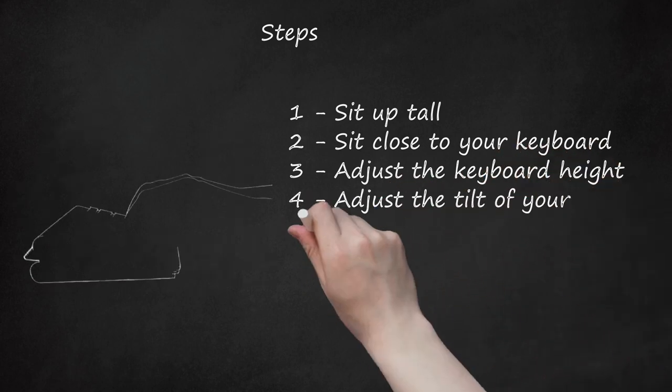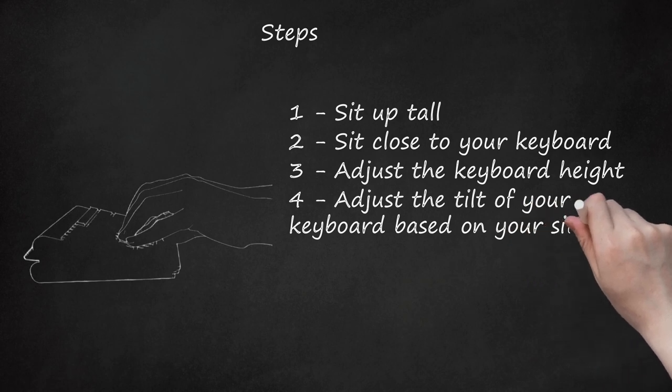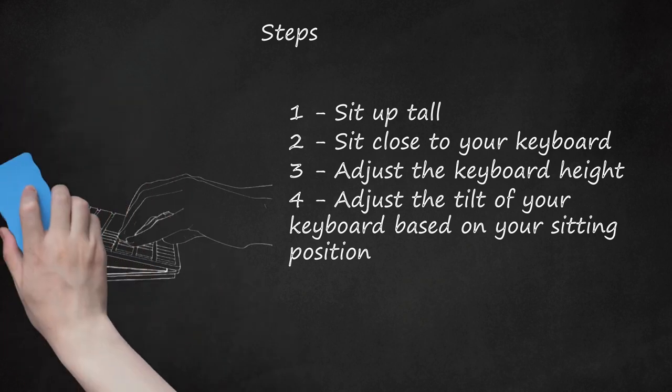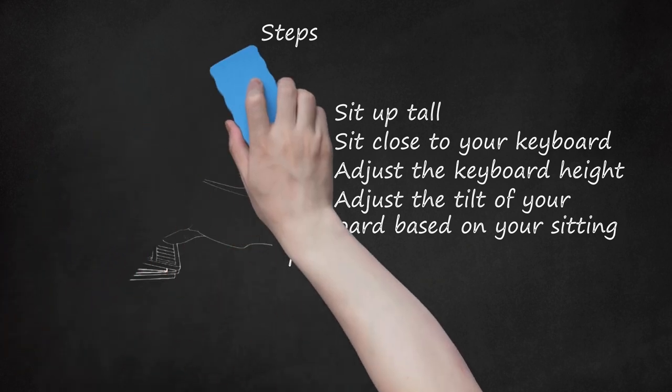4. Adjust the tilt of your keyboard based on your sitting position. Use the keyboard tray mechanism or keyboard feet to adjust the tilt. If you sit in a forward or upright position, try tilting your keyboard away from you, but if you are slightly reclined, then a slight forward tilt will help to maintain a straight wrist position.